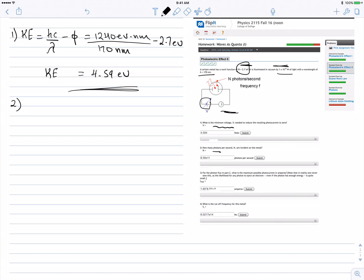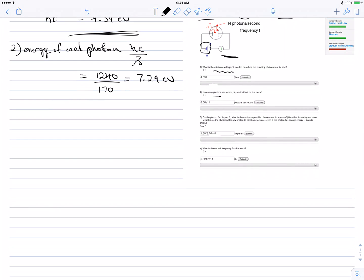What we're going to do is energy of each photon equals hc divided by lambda. We get 1240 divided by 170, that's going to be 7.29 electron volts. So that's the energy of each photon.